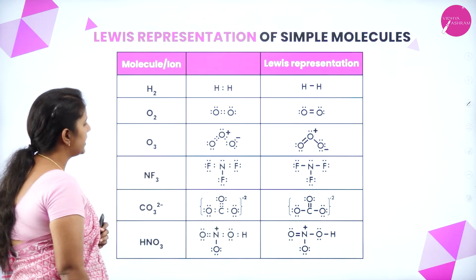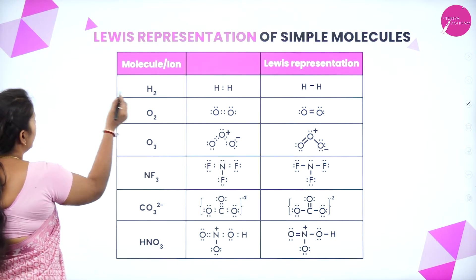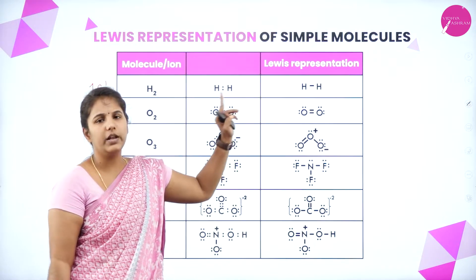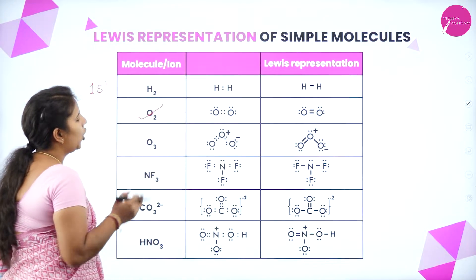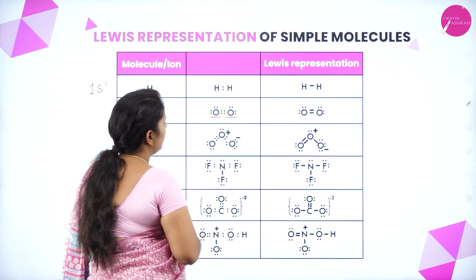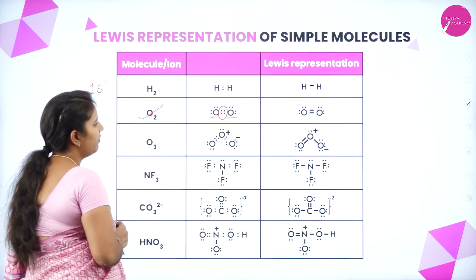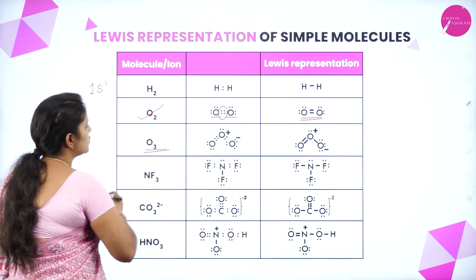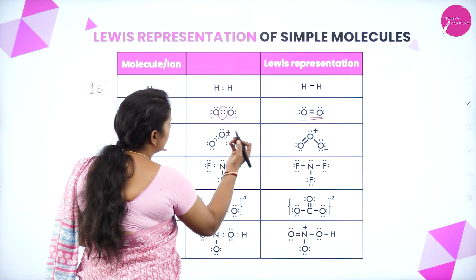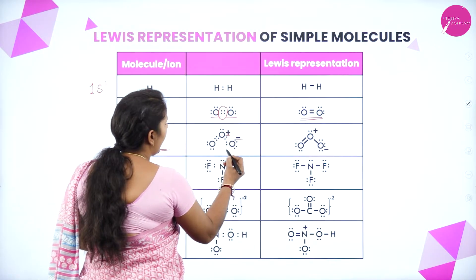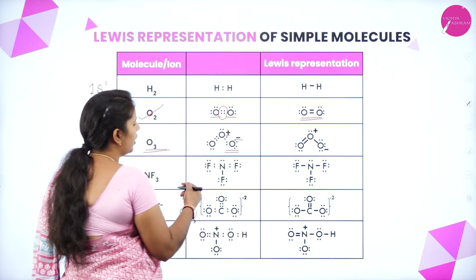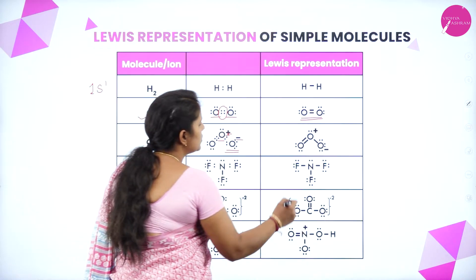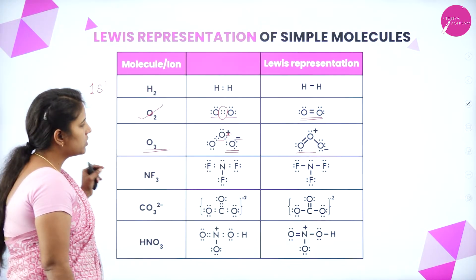Here are some molecule examples. For the hydrogen molecule, each hydrogen has 1 electron and shares 1 electron to form a single covalent bond. In the oxygen molecule, two oxygen atoms share 2 pairs of electrons to form a double bond. For ozone, one oxygen is written with a positive charge and one with a negative charge — because an atom with negative charge indicates acceptance of one electron, and positive charge indicates loss of one electron.